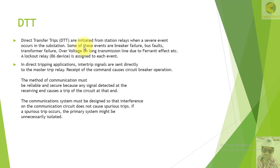Direct Transfer Trip schemes are normally employed on very severe faults like breaker failure and overvoltages. In direct tripping applications, intertrip signals are sent directly to the master tripping relay, and the received command causes circuit breaker operation. The DTT team functions by sending a signal from station A to station B to a master trip relay, which as soon as it receives the trip command, trips the local breaker.